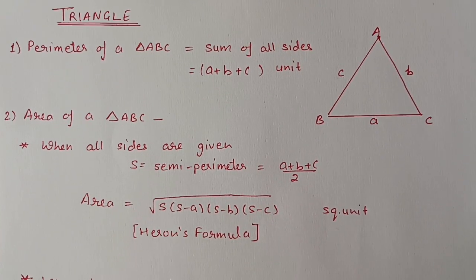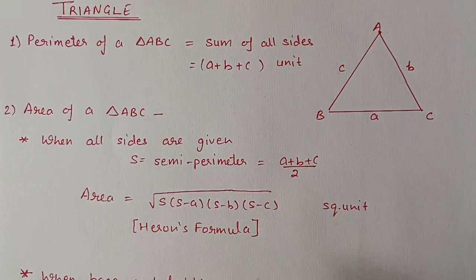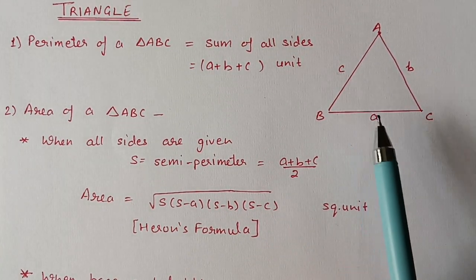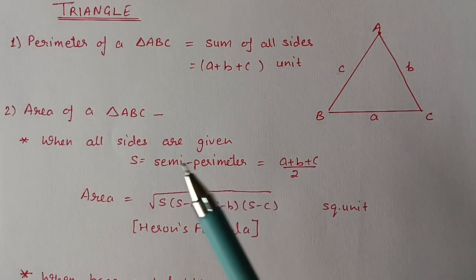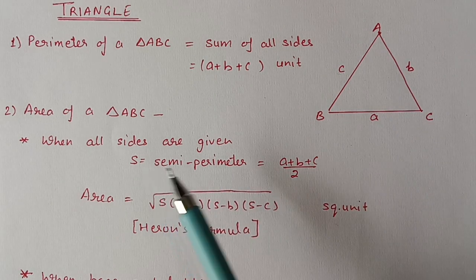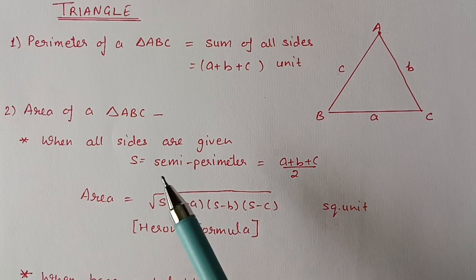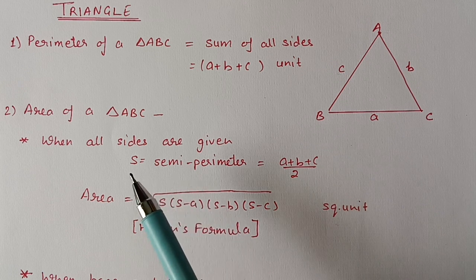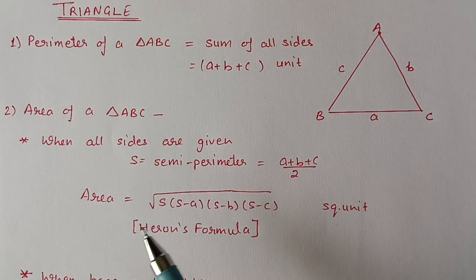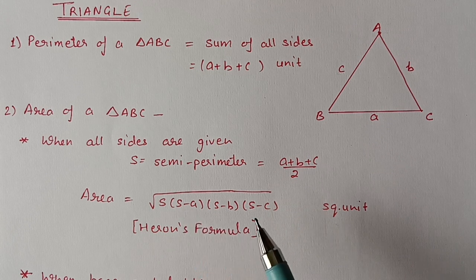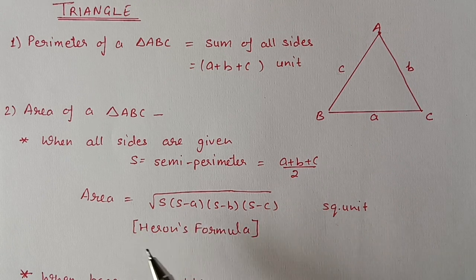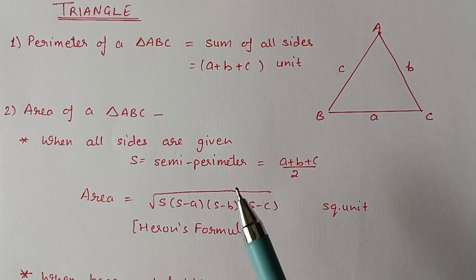If a, b, and c are the three sides of a triangle, in that case first we will find out the semi-perimeter, which we will denote by s. Then the area will be the square root of s(s−a)(s−b)(s−c) square units. This formula we will call Heron's formula, and we will use it when all three sides are given.